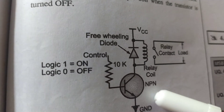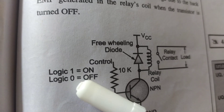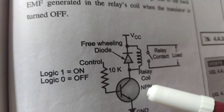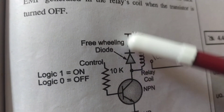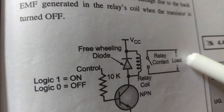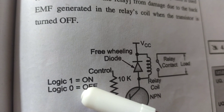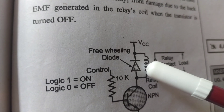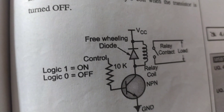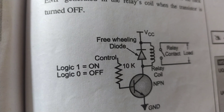The microcontroller outputs logic one or logic zero, which is given to the base of the transistor. When logic one is applied, the transistor turns on and VCC current flows through the coil, energizing it so the relay contact closes and the load turns on. When logic zero comes from the microcontroller, the transistor turns off, the coil is de-energized, the relay contact returns to rest, and the load turns off.